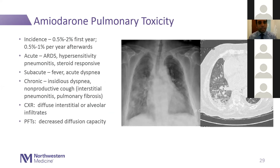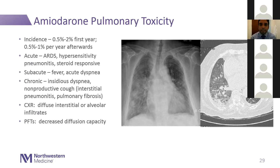Pulmonary toxicity with amiodarone has a low but real incidence — 0.5 to 2% in the first year, then 0.5 to 1% per year thereafter. Acute forms include acute respiratory distress syndrome and hypersensitivity pneumonitis — patients can be steroid-responsive. Subacute pulmonary toxicity presents with fever and acute dyspnea. Chronic pulmonary toxicity presents as insidious dyspnea and non-productive cough, with interstitial pneumonitis or pulmonary fibrosis on imaging. Chest X-ray shows diffuse interstitial or alveolar infiltrates, and PFTs show decreased diffusion capacity.